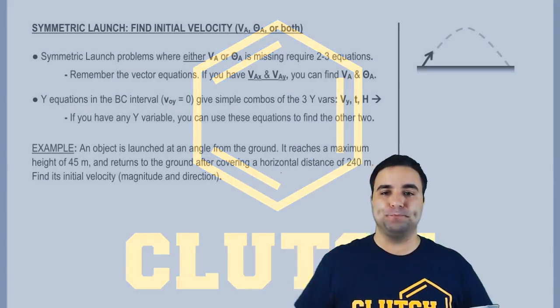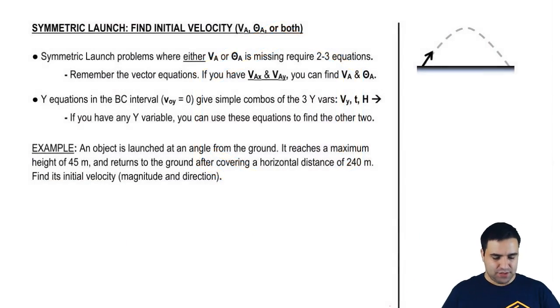Hey guys, we're now going to talk about symmetric motion problems where you don't have the initial velocity. Let's check it out. So usually in symmetric motion problems or projectile motion problems in general, you're given the initial velocity and the initial angle, and then you're asked to find the range, how long it's in the air for, and all that kind of stuff. But what happens if you don't have these?